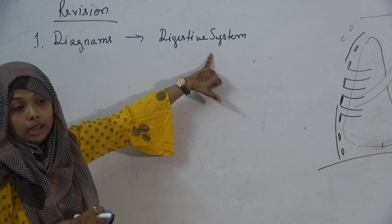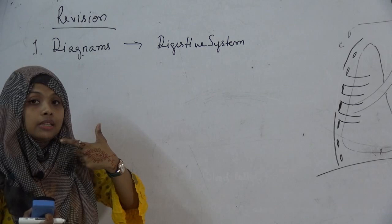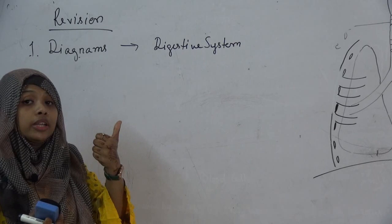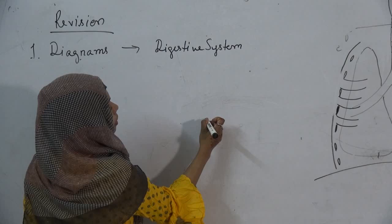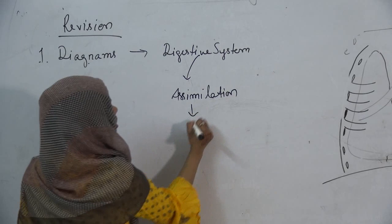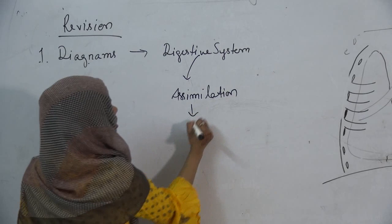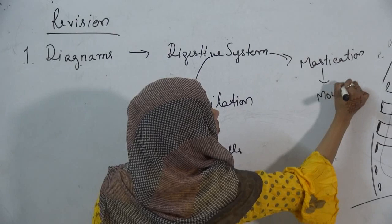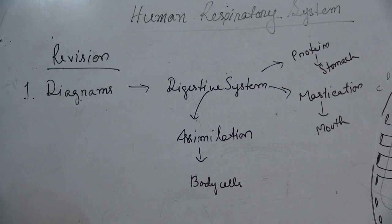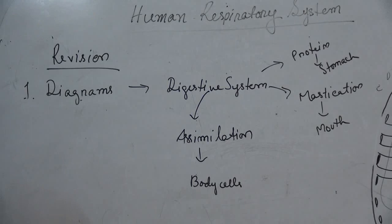For the digestive system, learn how to draw and label it properly and go through the functions of each part. For example: in the mouth, mastication is taking place; in the stomach, digestion of protein; in the small intestine, absorption of food; in body cells, assimilation. I want you to make a spider diagram — for example, where does assimilation take place? Body cells. Where does mastication take place? The mouth. Where does digestion of protein take place? The stomach.